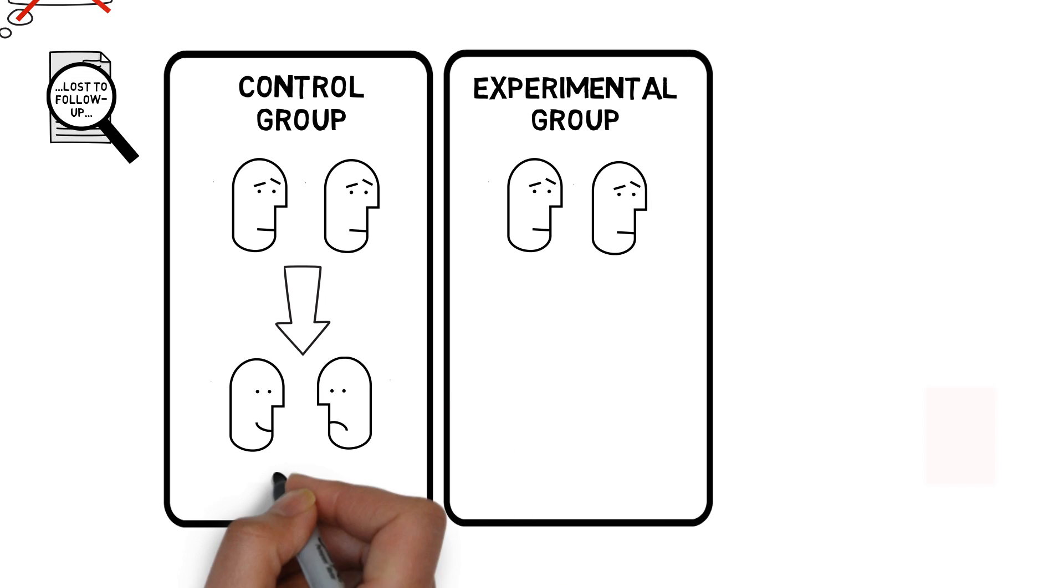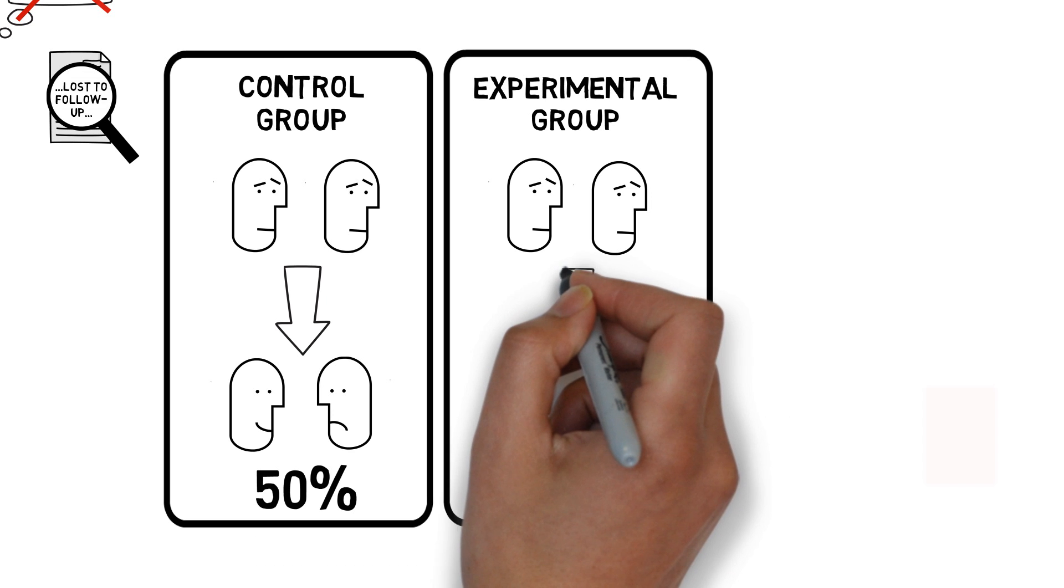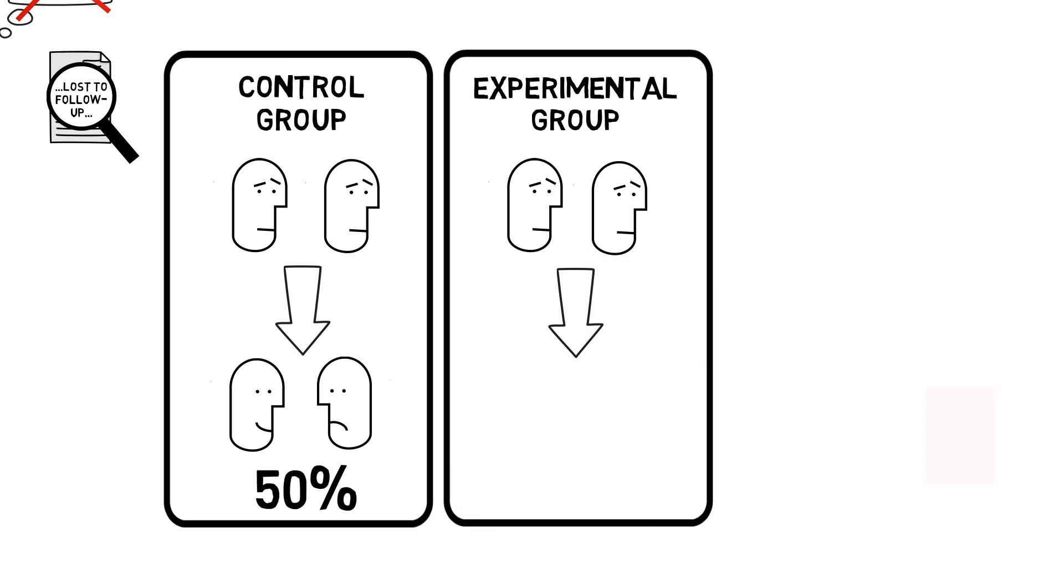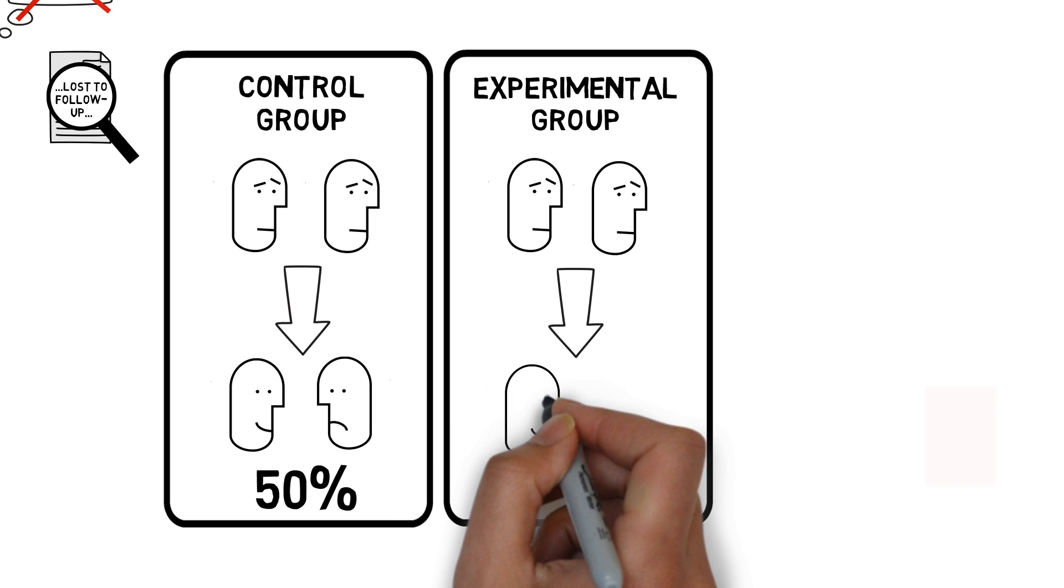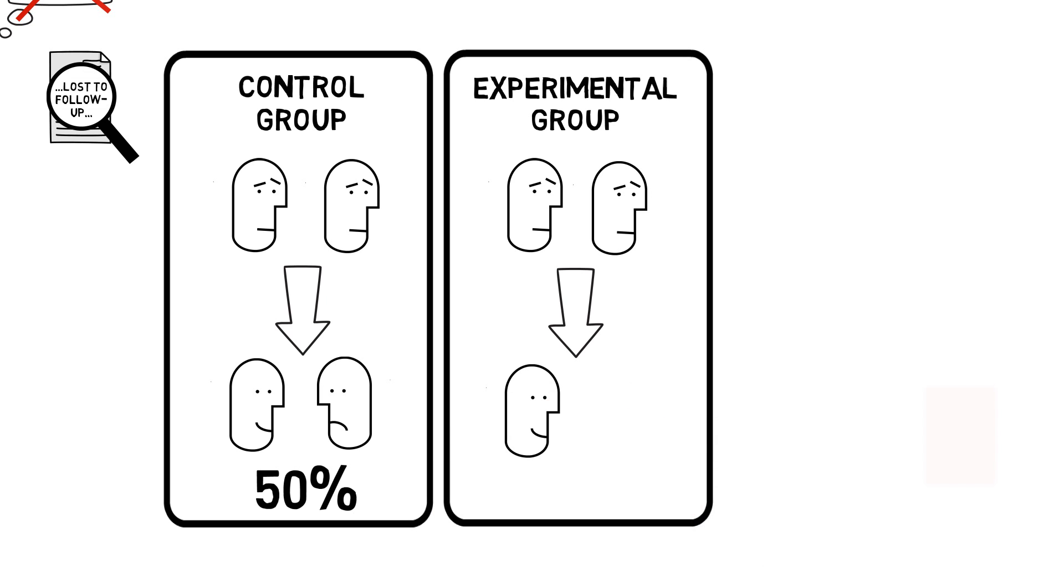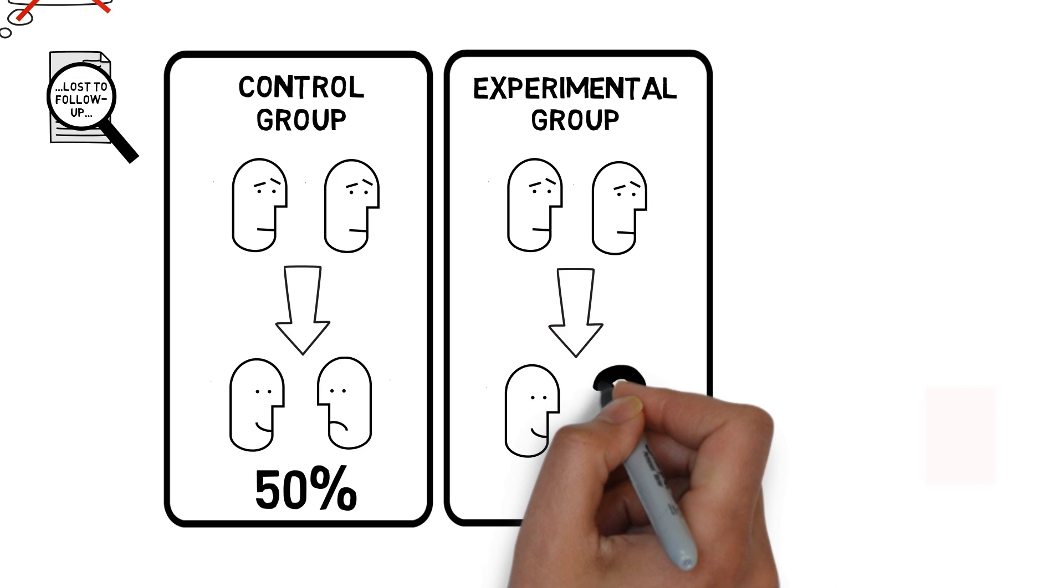and I calculate the probability of good outcome in the control group to be 50%. In the experimental group, one participant has the good outcome. Unfortunately, the second participant was not able to be reached by the researchers, and as such,